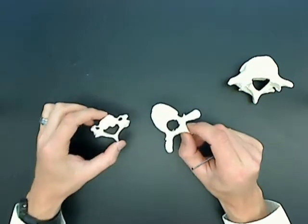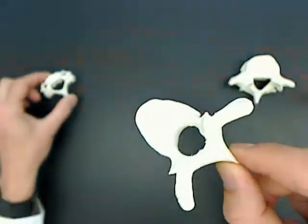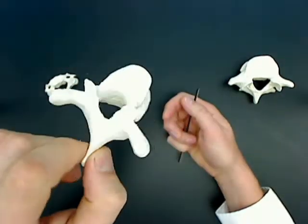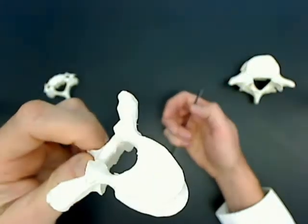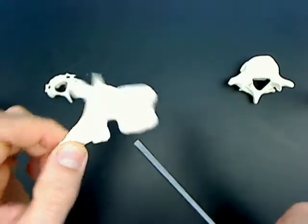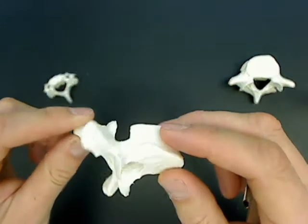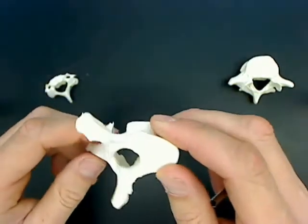For thoracic vertebrae, they're slightly larger than the cervical vertebrae usually. On a real thoracic vertebrae, you'll see facets where the ribs articulate with these bones, but on this plastic one you can't really see that.